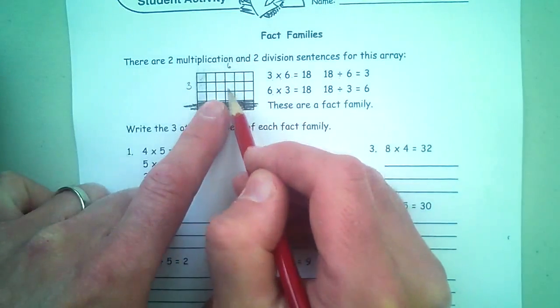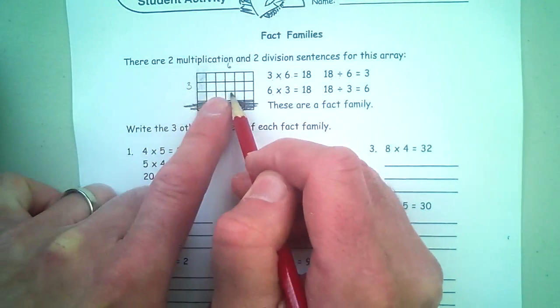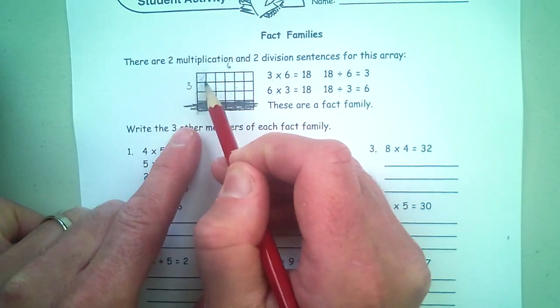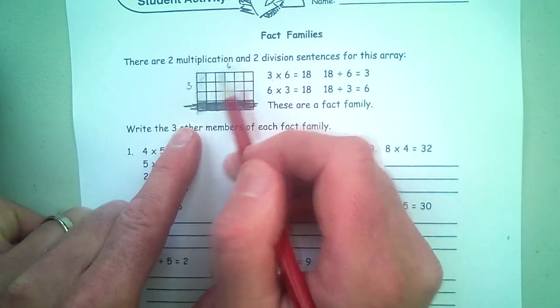And so where you have your 18 squares divided by 6 gives you 3. 18 divided by 3 gives you 6. 6 times 3 gives you the 18. And the 3 times 6 is the 18.